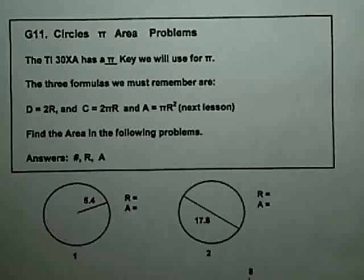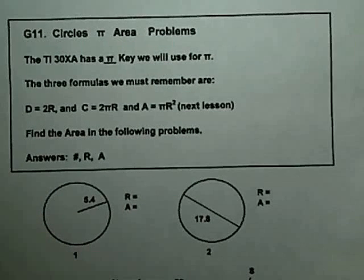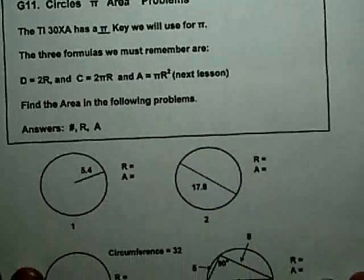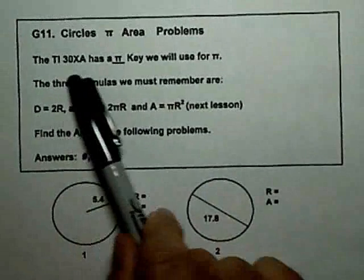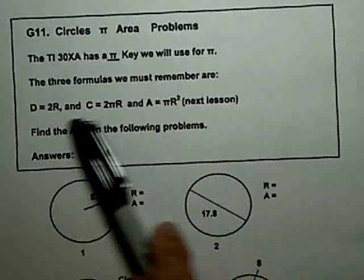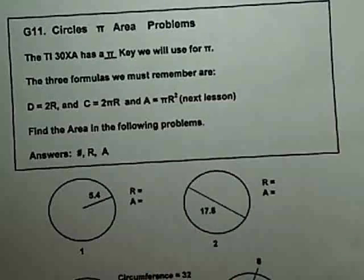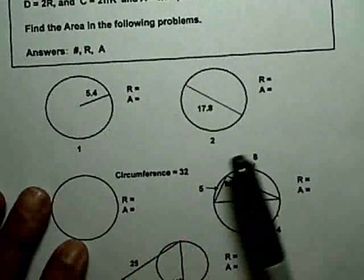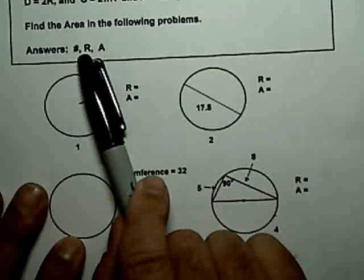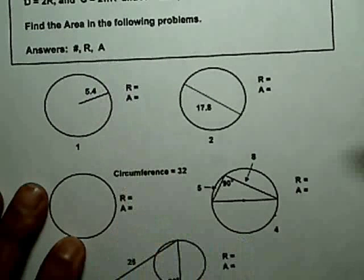Now I'm going to give you some problems. Back down to the real world now, the practical world, and this is real easy. We want to find some areas. I remind you that the calculator has a pi key, and the formulas that we've learned, the ones we're interested in today, is the area formula, πr². So I'm going to give you some circles, actually the same ones I gave you last time, only this time I want to know the radius and the area.